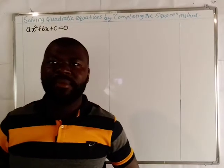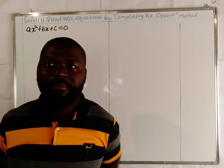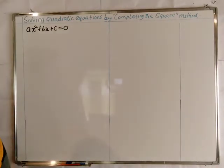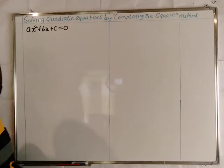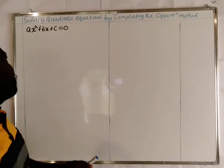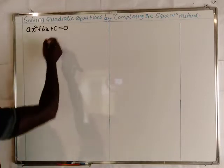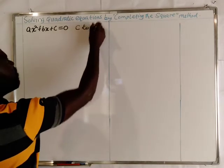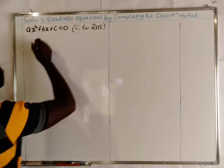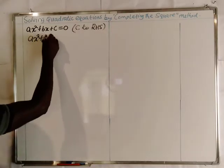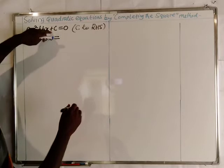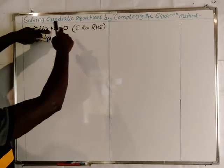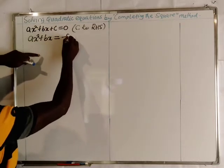We are solving quadratic equations by the method of completing the square. This is the general form of a quadratic equation: ax squared plus bx plus c equals zero. Solving by this method, we transfer c to the right hand side, so we have ax squared plus bx equal to negative c.